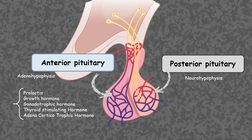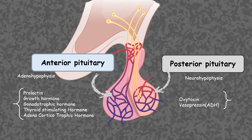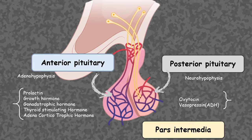The anterior pituitary gives rise to hormones such as prolactin, growth hormone, gonadotropins, thyroid stimulating hormone, and adrenocorticotropic hormone. The posterior pituitary gives rise to oxytocin and vasopressin. In between these two locations, there is a thin line-like structure known as pars intermedia.